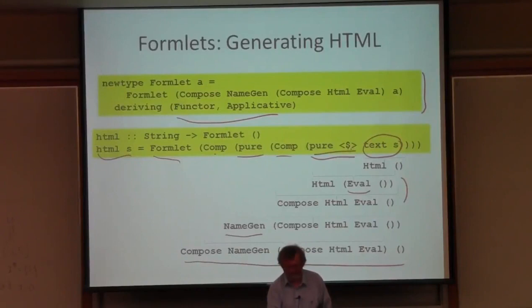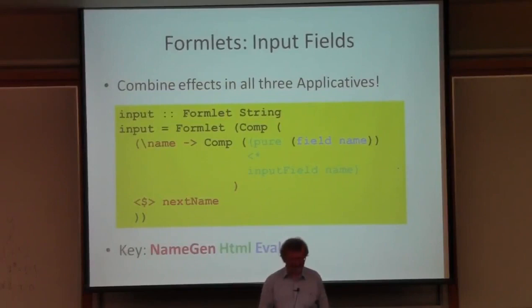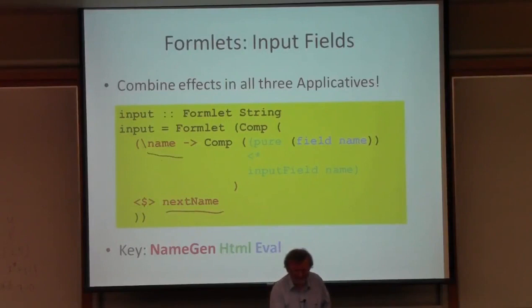Here is the code for generating an input field, and this uses effects in all three applicative functors. I've color-coded them so that you can understand it more easily. The outermost one is name generation — we generate a name and then apply a function to it, which binds the name to the generated name in all the rest of the code.